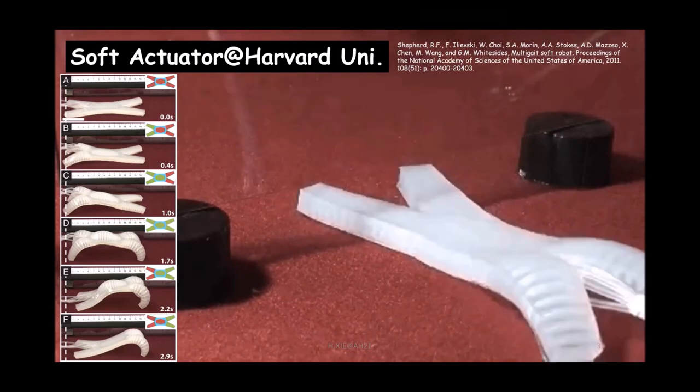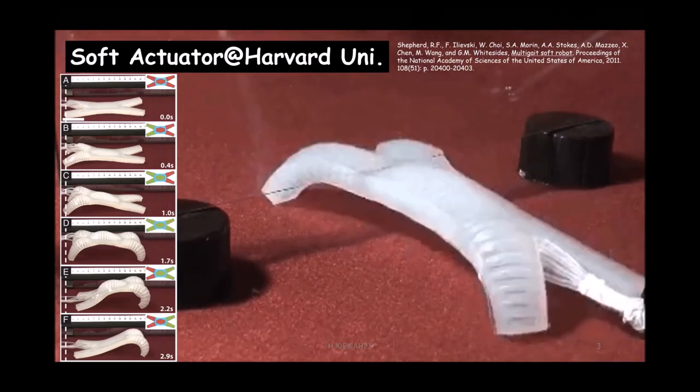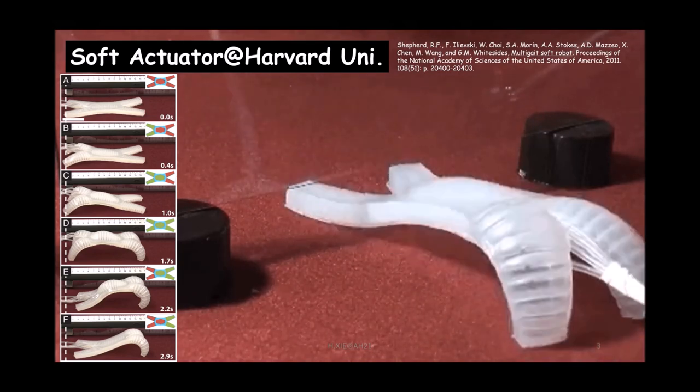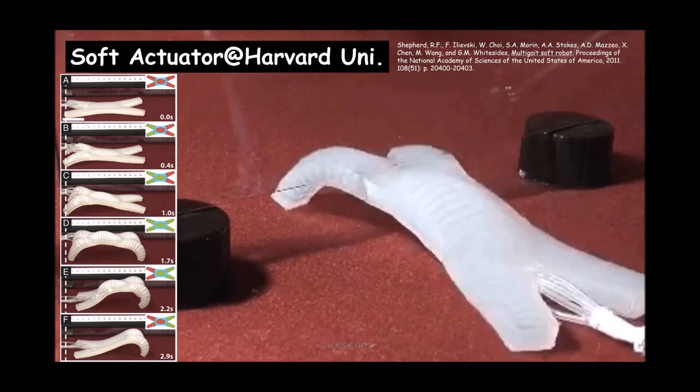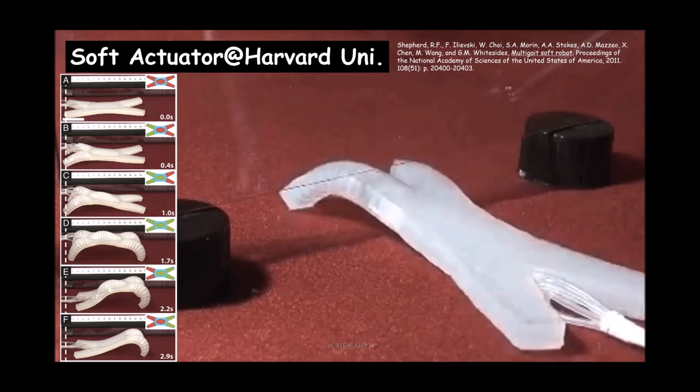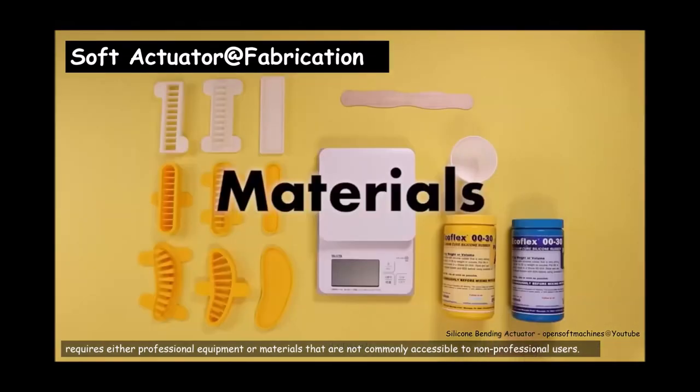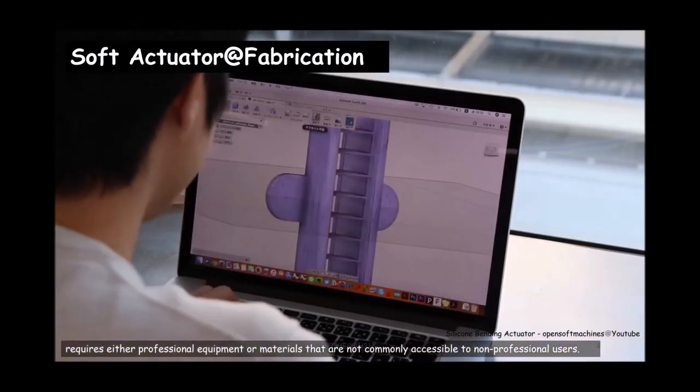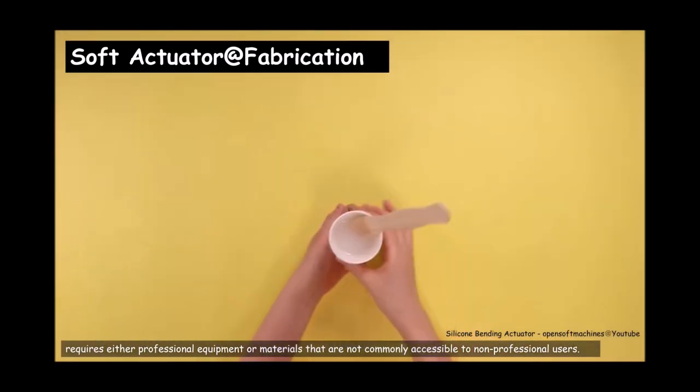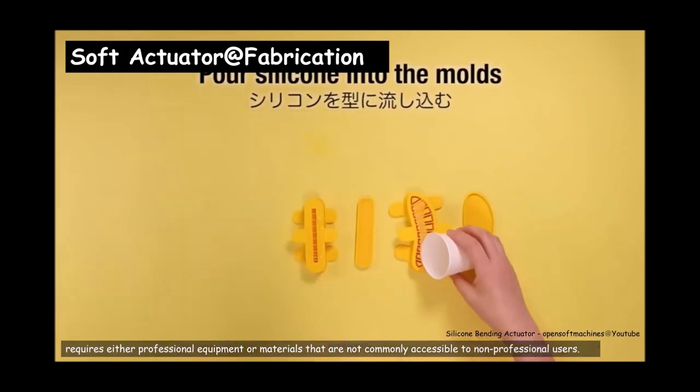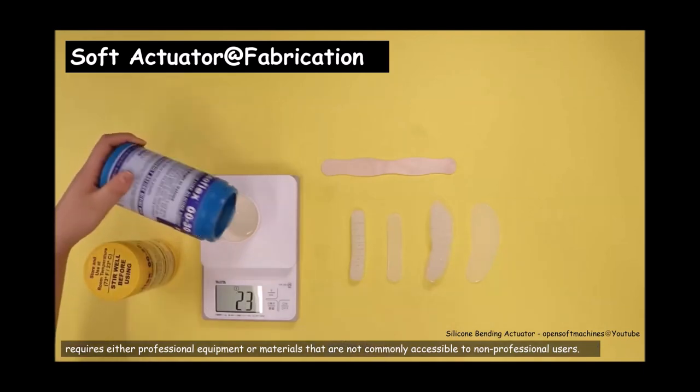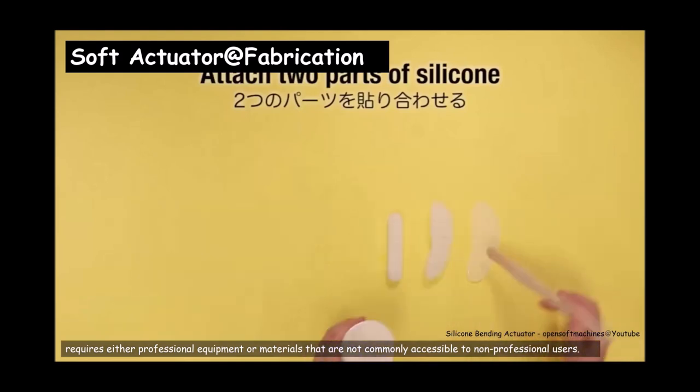This is how soft robotics works. We can see this is the start point of the soft actuator. This is a soft actuator developed by Harvard University. They use four actuators here, like the four legs of this kind of worm robot. But it's not easy to make this kind of soft actuator. We see that we need a 3D printer, we also need to do the resin to make the model. We need to require some professional equipment and materials to make this, and it's very time consuming.